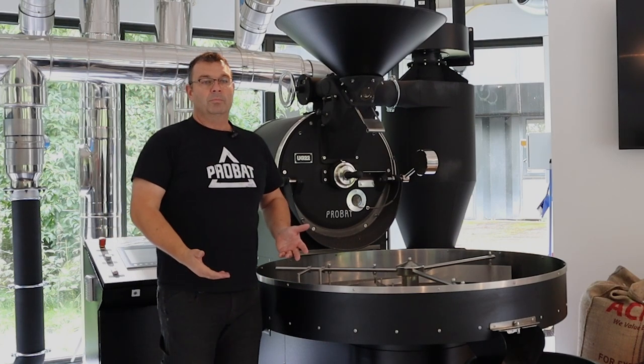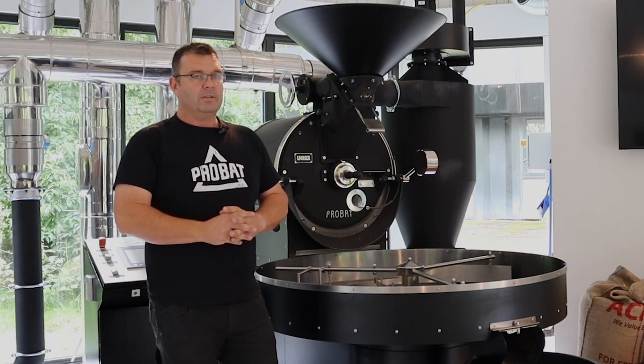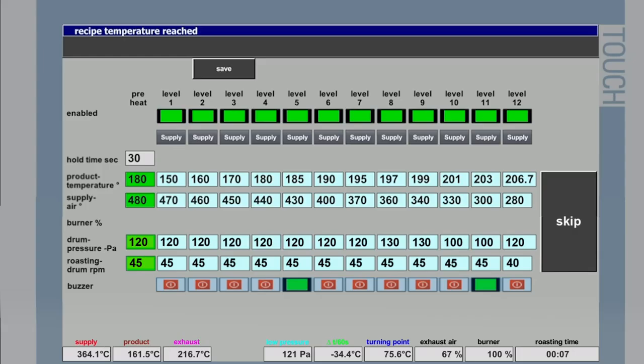So the process is started. That means we have left the preheating process. We are now in the first level of the recipe. We have 12 steps. We will proceed now step by step. That means we will roast with our burner with a supply temperature from at the moment 470 degrees, until we reach the first point from 150 degrees. And then we go to the next level from the profile.